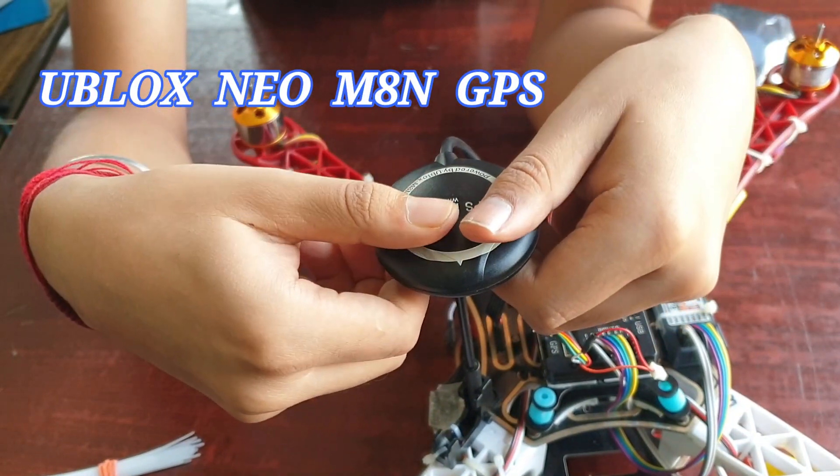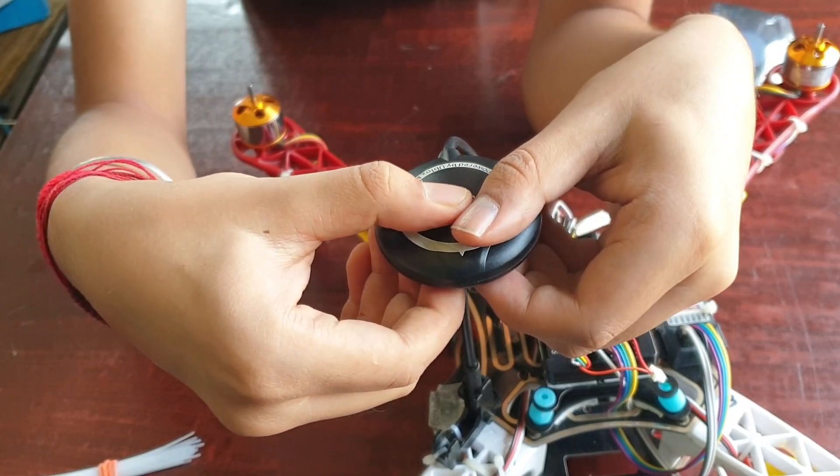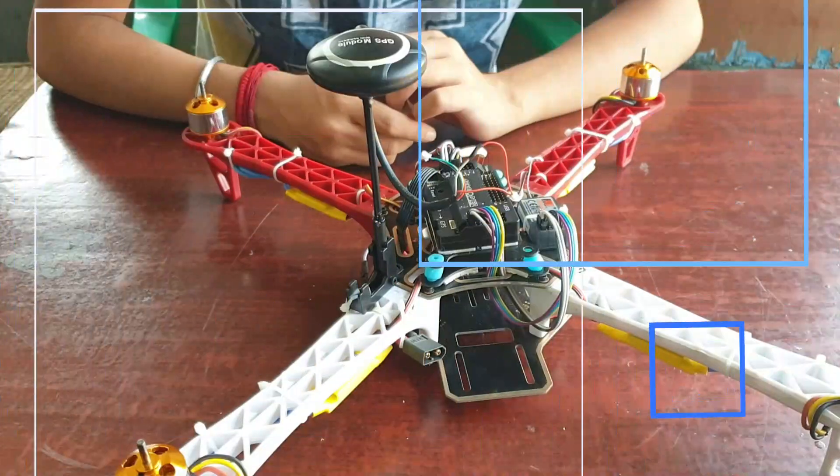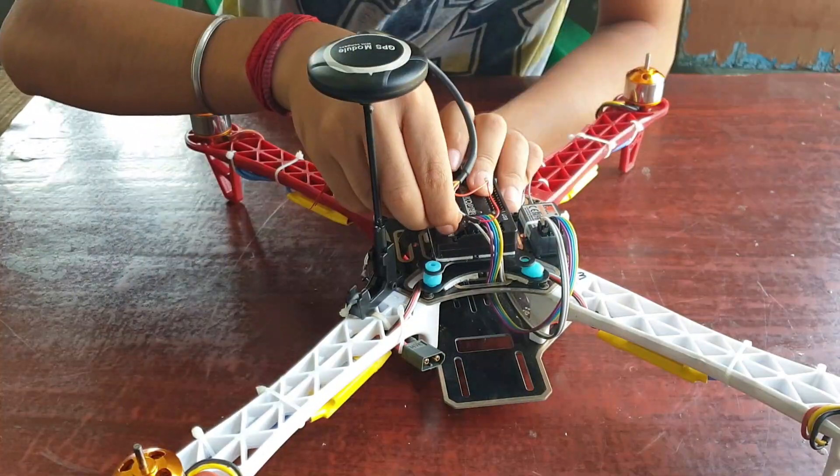Remember, the GPS forward direction and the APM 2.8 forward direction should be in the same angle.